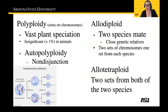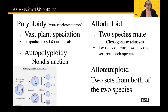Another way sympatric speciation happens is through polyploidy. Polyploidy is an extra set of chromosomes arising through a couple of different mechanisms. This happens very often in plants — less than 1% of the time in animals — but in plants it happens regularly, probably 70% of the time we'll see polyploidy events occur.